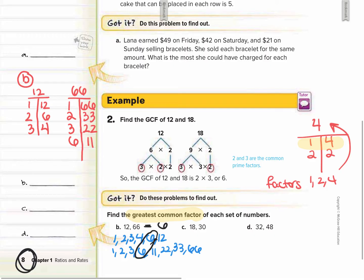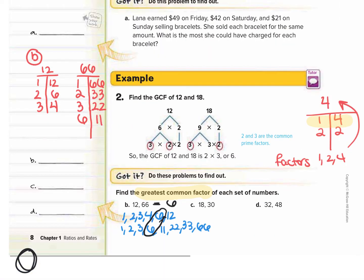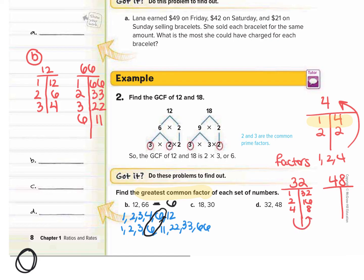So the greatest common factor of 12 and 66 is 6. Now I'm going to jump to letter D. We want to find the greatest common factor of 32 and 48. The first two factors of any number are 1 and itself. Then we try 2: 2 times 16 goes into 32. 3 does not go into 32, so we skip that. 4 times 8 goes into 32. 5, 6, and 7 don't go into 32, and then we're right back at 8, so we've gotten all the factors of 32.